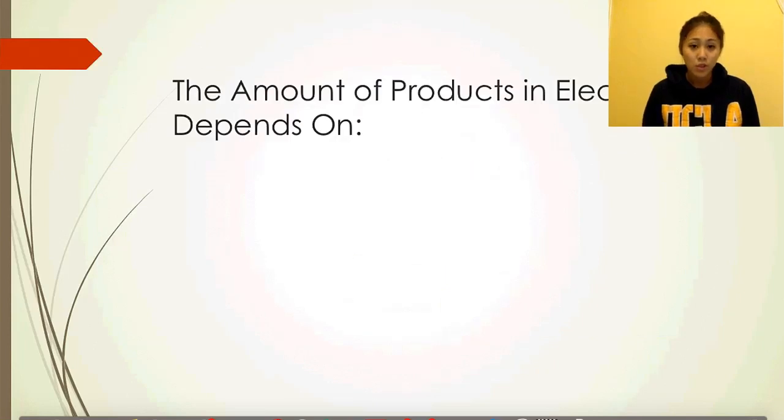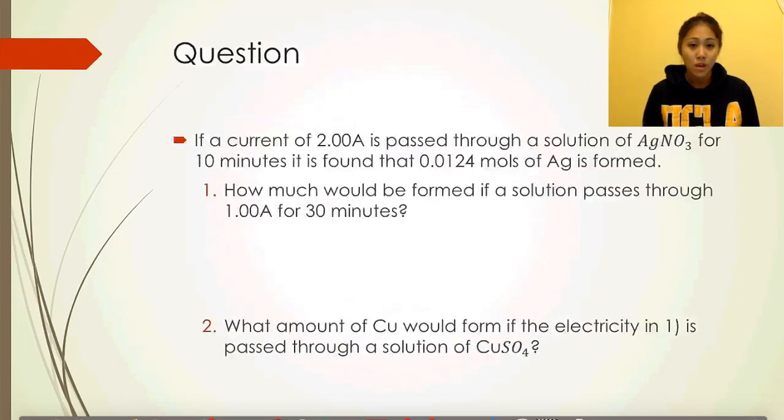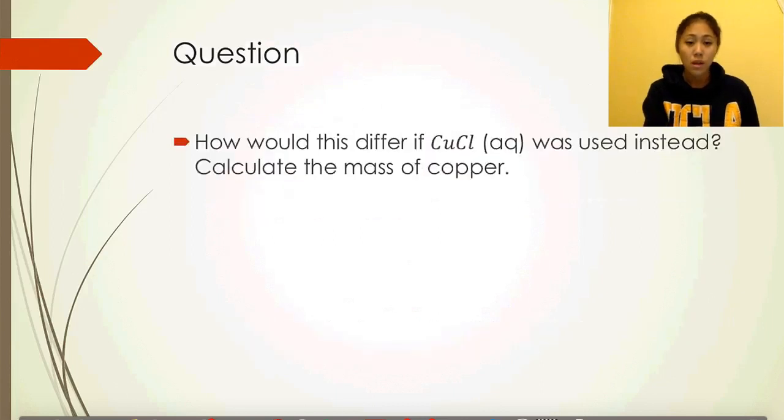Now let's give it a try. How would this differ if copper chloride was used instead? Try to calculate the mass of copper deposited again, but this time instead of copper two, you're using copper plus one.